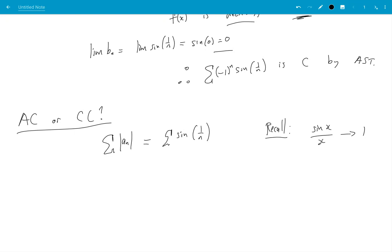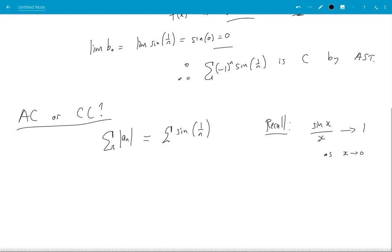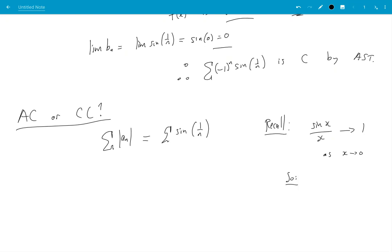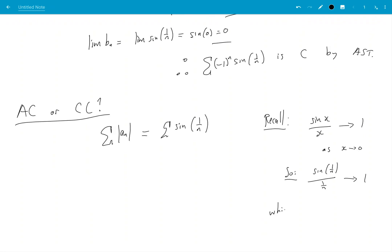So what does this suggest to me as x goes to zero? This tells me that sin(1/n) divided by 1/n goes to 1, which suggests a limit comparison test here.